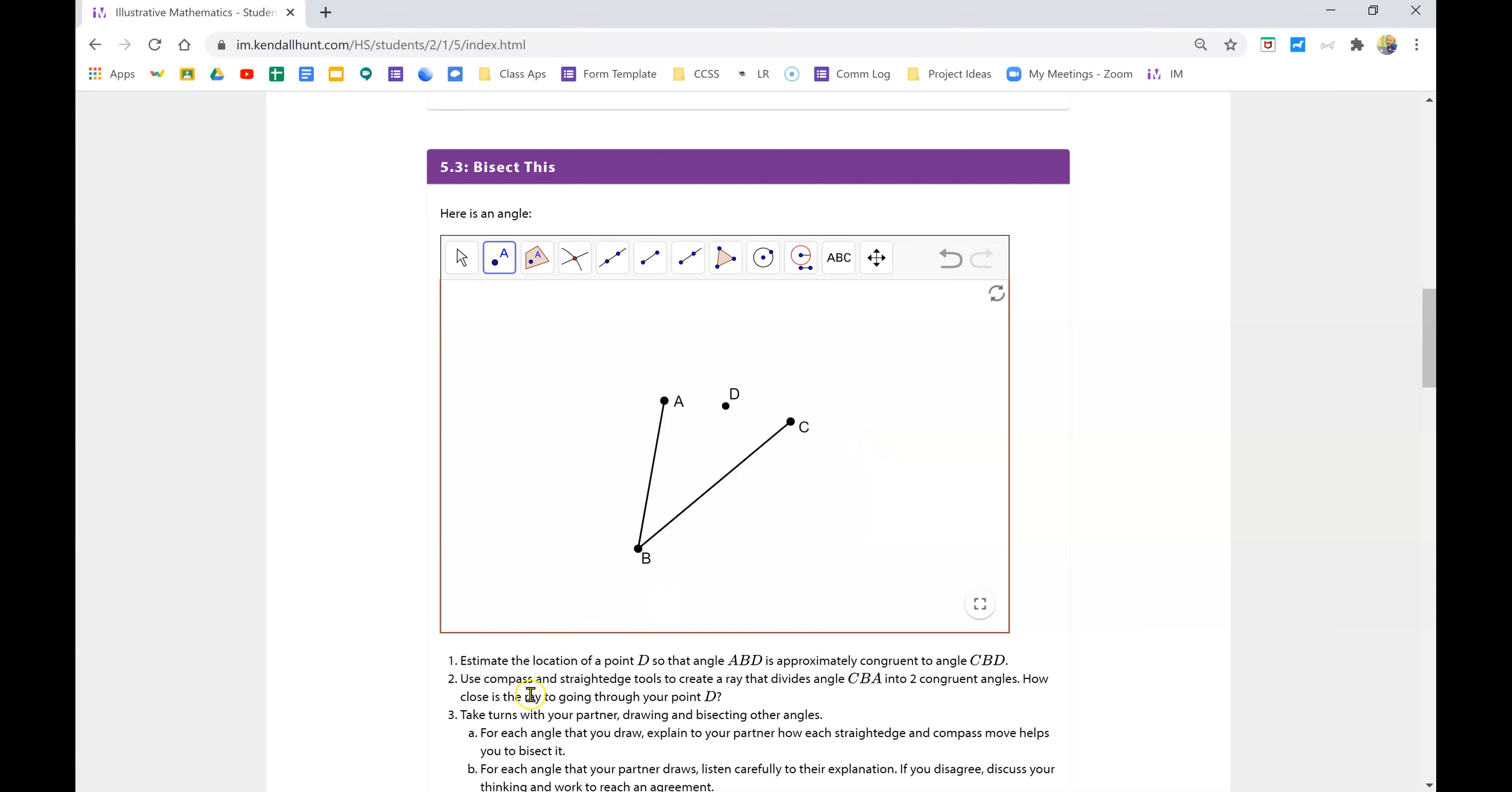Alright, then it says use the compass and straight edge tool to create a ray that divides angle CBA into two congruent angles. So I'm going to show you the steps to do that.